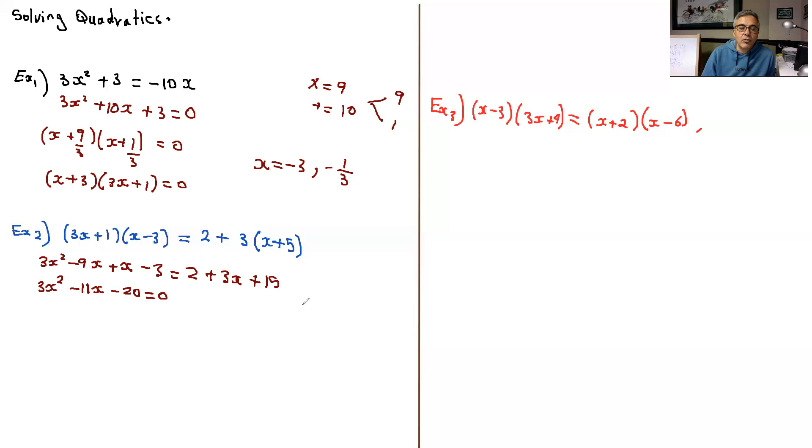Now we could factor this. We're looking for two numbers that multiply to give me negative 60, equals 3 times negative 20, and add to give me negative 11. So I think the two numbers would be negative 15 times 4 because 4 times negative 15 give me negative 60.